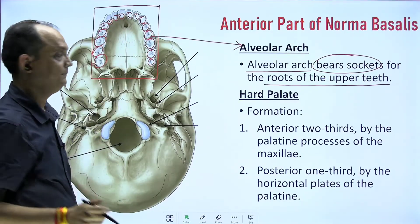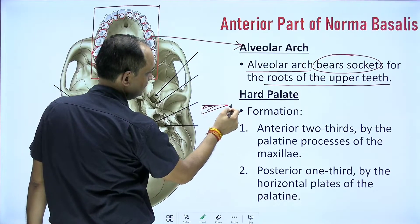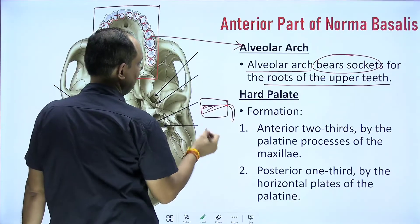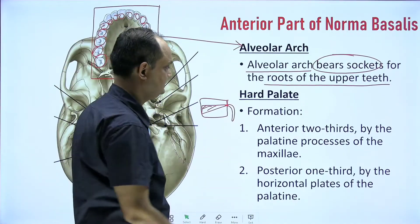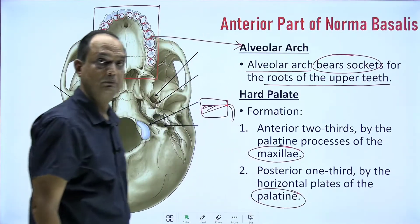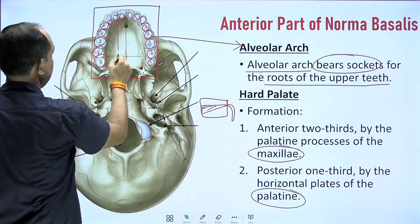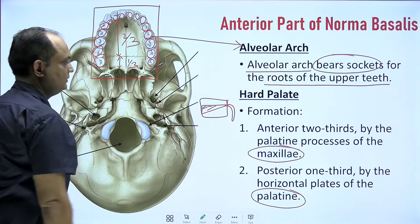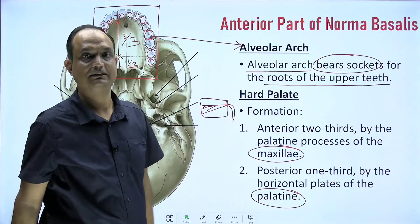In the middle portion you will find the hard palate. The palate is made up of two parts: the hard palate anteriorly and the soft palate posteriorly. When you see the hard palate in norma basalis, it is formed by two bones — one is the contribution of the maxilla and the second is the contribution of the palatine bone. The major contribution, meaning the anterior two-thirds, comes from the maxilla, and the posterior one-third comes from the palatine bone.